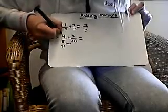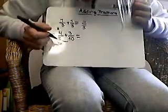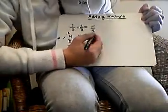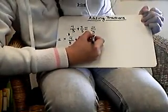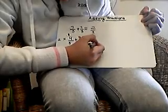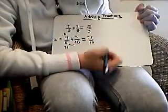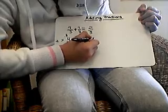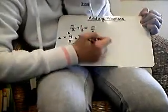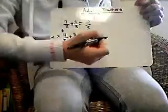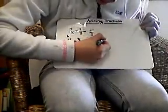So now you just add 8 plus 3, which equals 11. It's 11 tenths. But this doesn't work because you can't take 11 out of 10. So, how many times does 10 go into 11? It goes in 1 time.